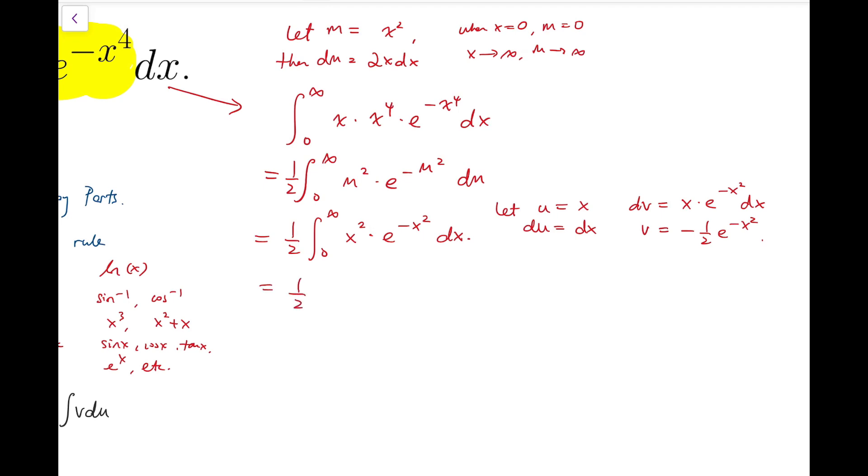Now I can follow the formula and say that this is equal to minus x over 2 times e to the minus x squared minus the integral of v du, which is minus a half times e to the minus x squared dx. Now we put back the limits, infinity and 0, on both expressions. This part should give you 0, because when you put the upper limit into e to the minus x squared you will get 0, and if you put the lower limit 0 into x over 2 you get 0 again. So that means what remains is just a half of 0 to infinity of e to the minus x squared dx.